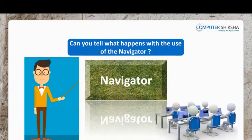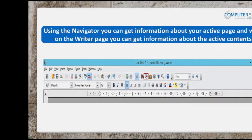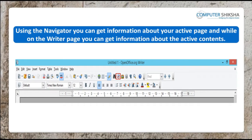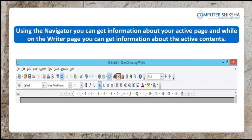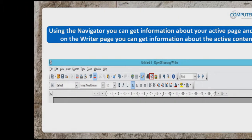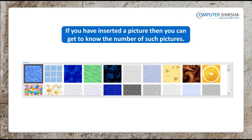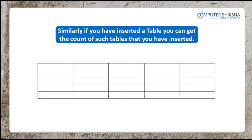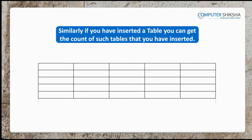Can you tell what happens with the use of the navigator? Using the navigator, you can get information about your active page, and while on the writer page, you can get information about the active contents. If you have inserted a picture, you can get to know the number of such pictures. Similarly, if you have inserted a table, you can get the count of such tables that you have inserted.